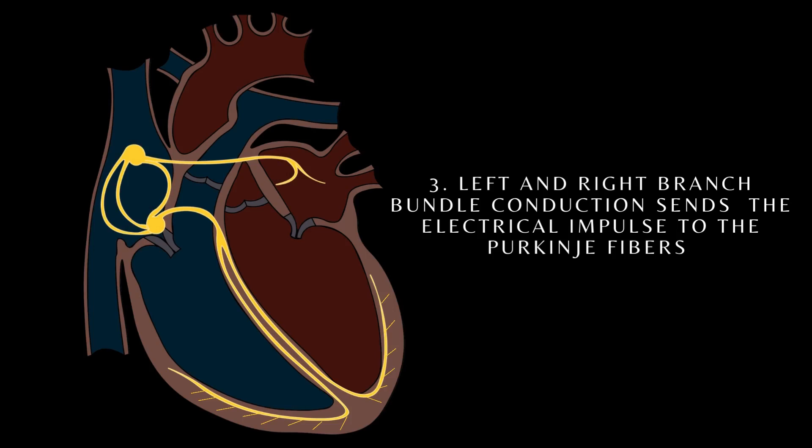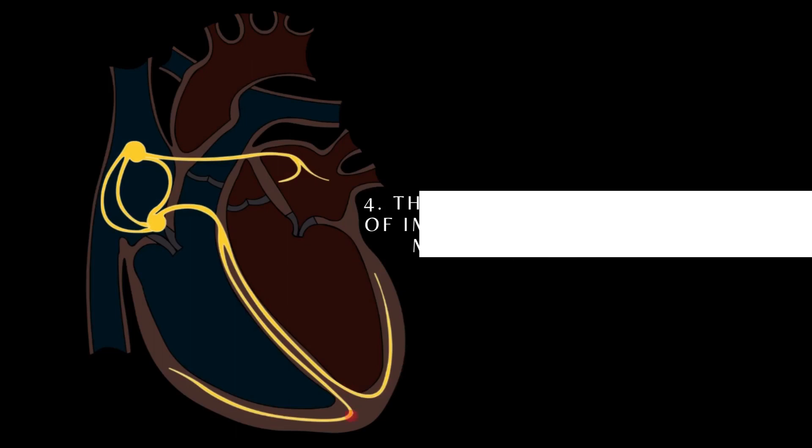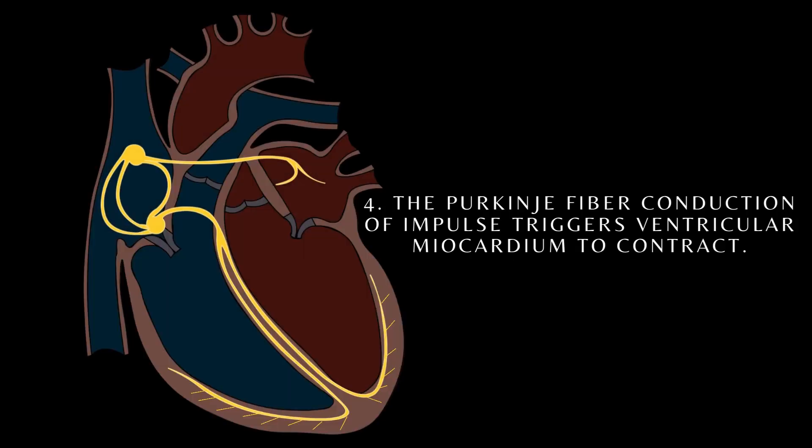Impulses are then conducted through the bundle of His and to the left and right branch bundles. Both left and right branch bundles send these impulses to the Purkinje fibers where they trigger the ventricular myocardium to contract.